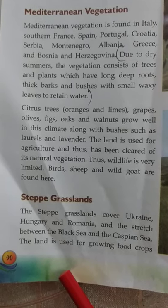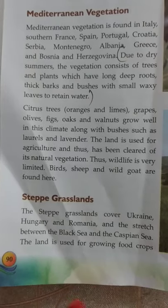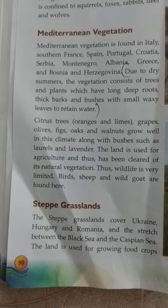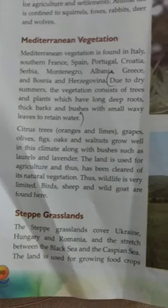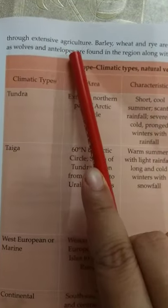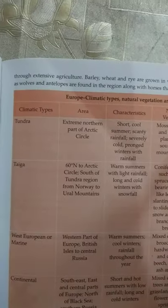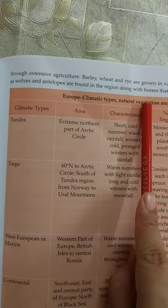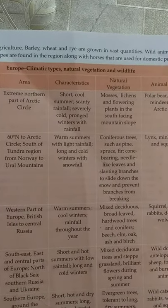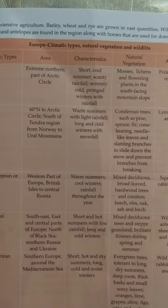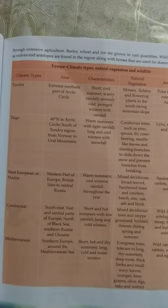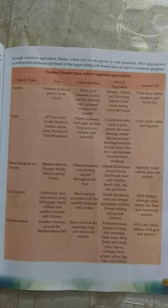The last type is the steppe grasslands. The steppe grasslands cover Ukraine, Hungary, Romania, and stretch between the Black Sea and the Caspian Sea. This land is very fertile — the steppes are temperate grasslands. This region is brought under extensive agriculture and crops like barley, wheat, and rye are grown in huge quantities. Wild animals found here include wolves, antelopes, and horses used for domestic purposes. On page 91 there is an orange color chart giving all the characteristic features of the climatic types, the area, natural vegetation, and animal life.